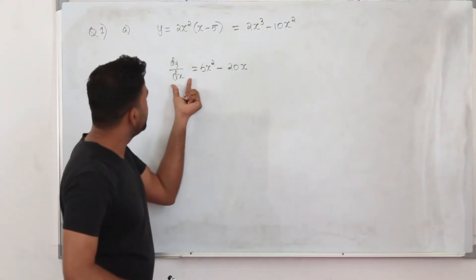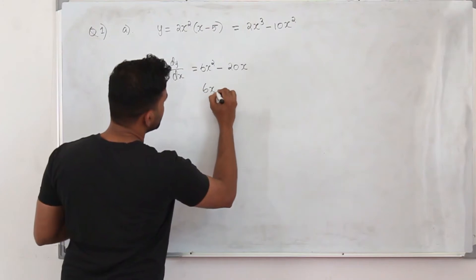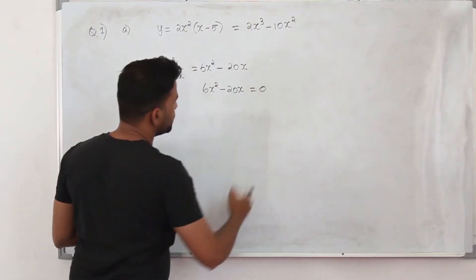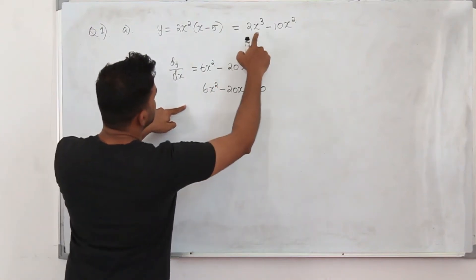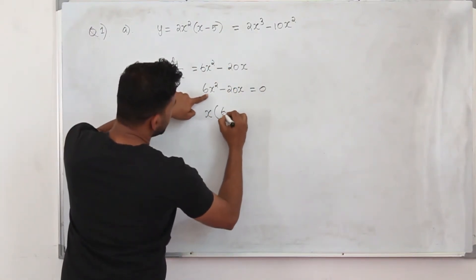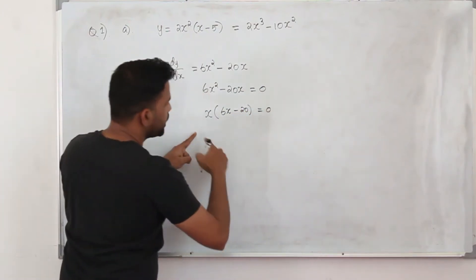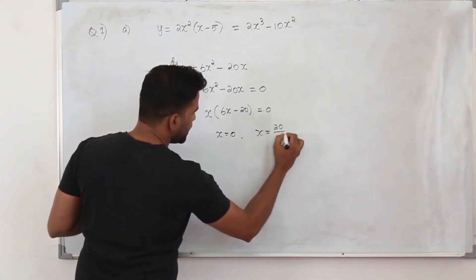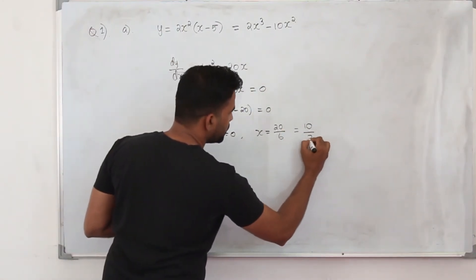Now equate this first derivative to 0 to find the values of x. So 6x squared minus 20x equals 0. We can take x as a common factor, giving x(6x minus 20) equals 0. Equating each factor to 0: x equals 0, or x equals 20/6, which simplifies to 10/3.